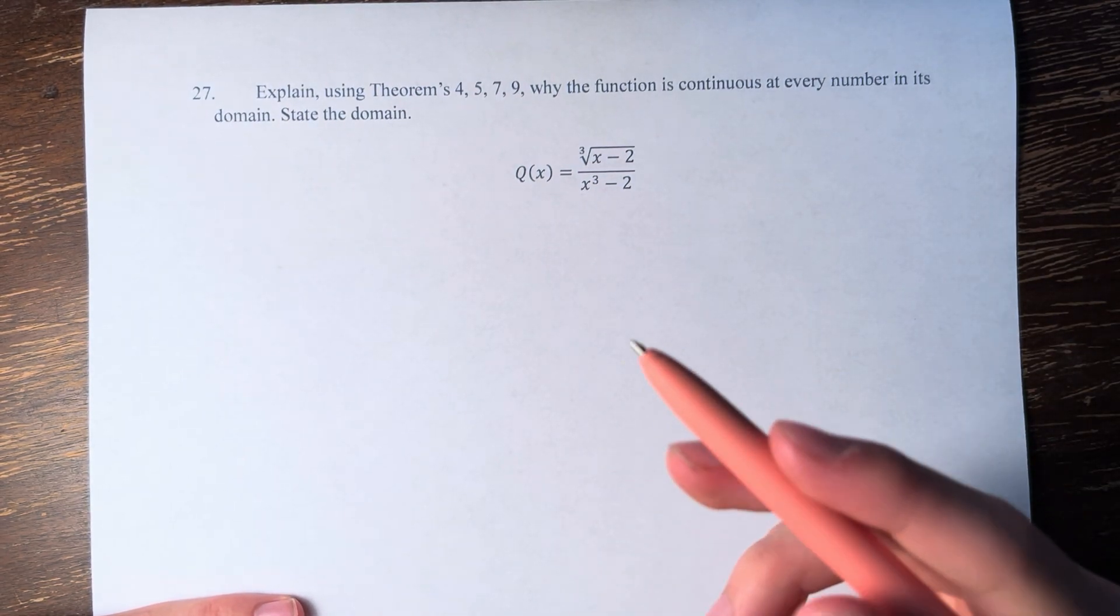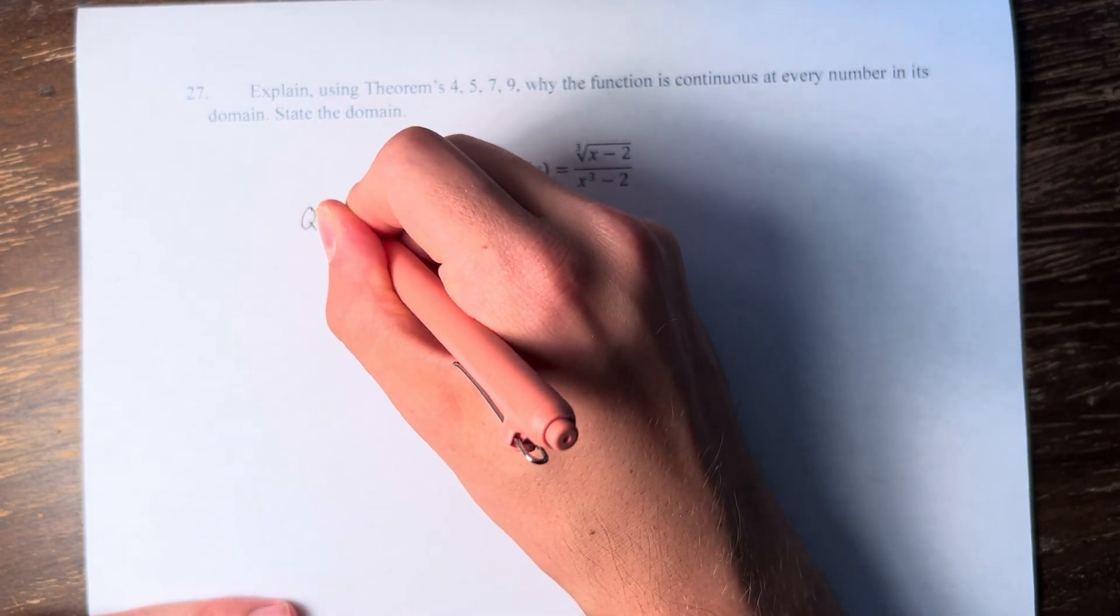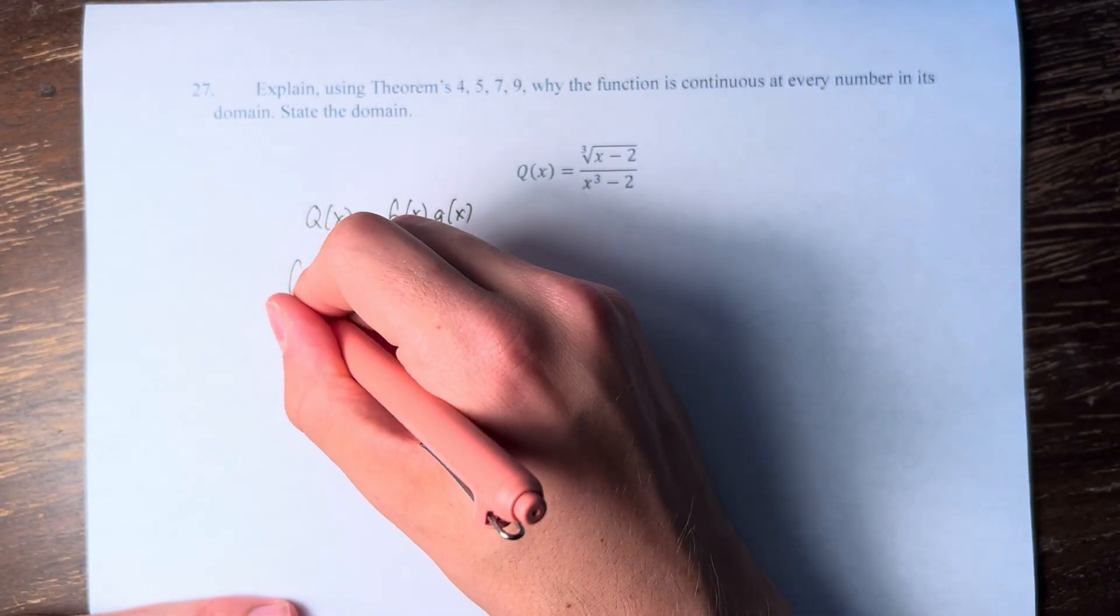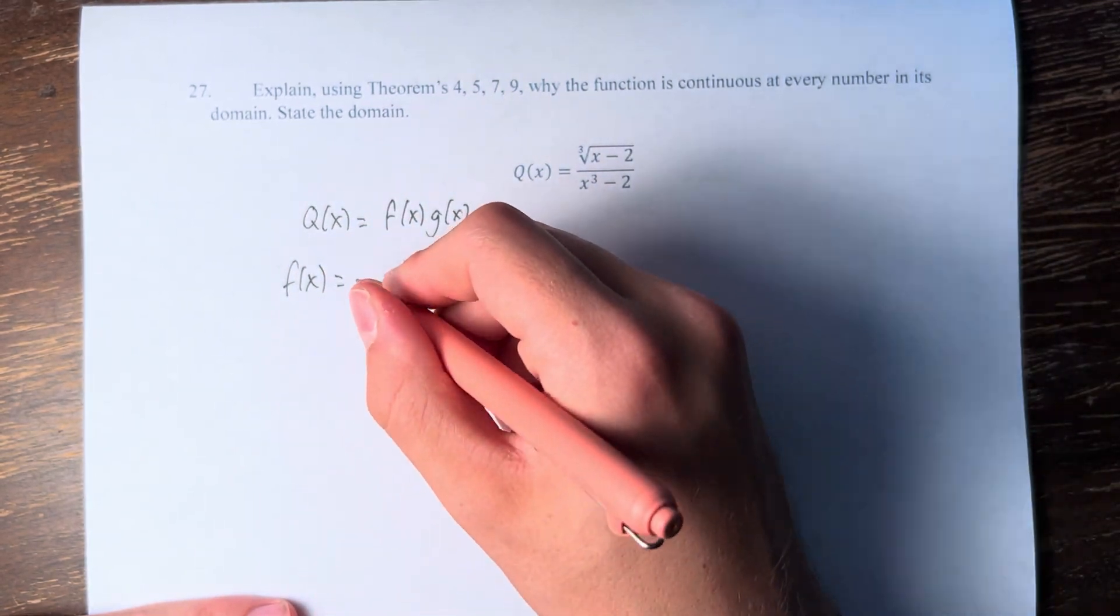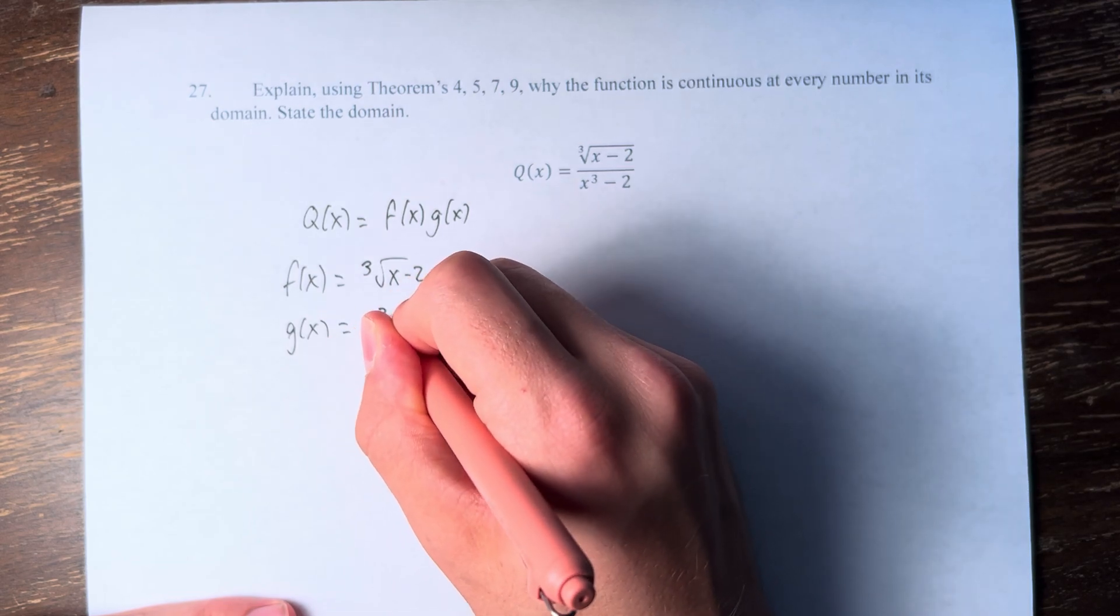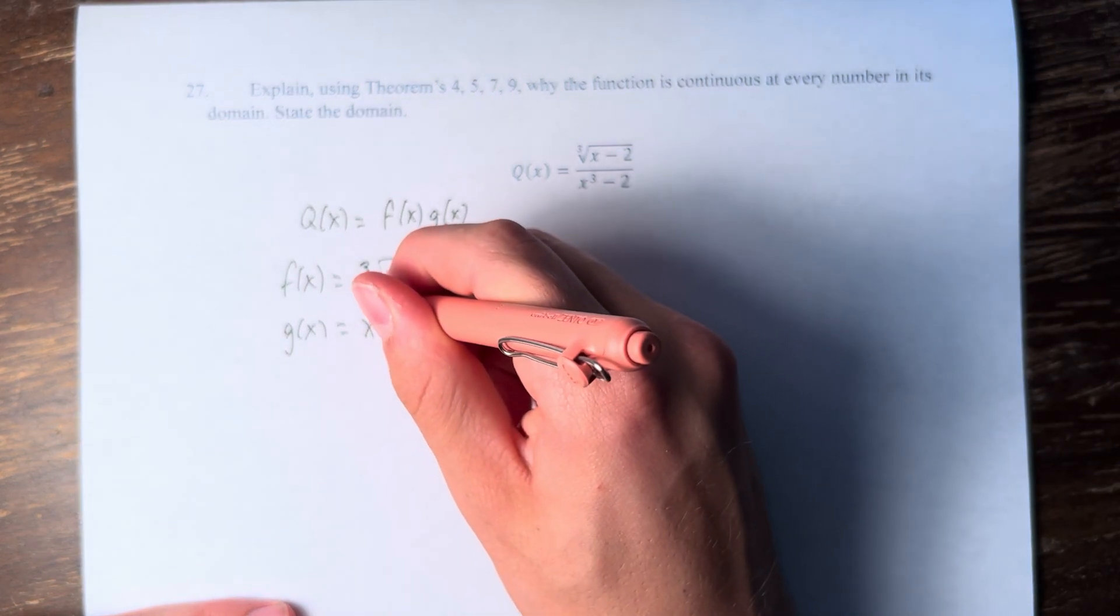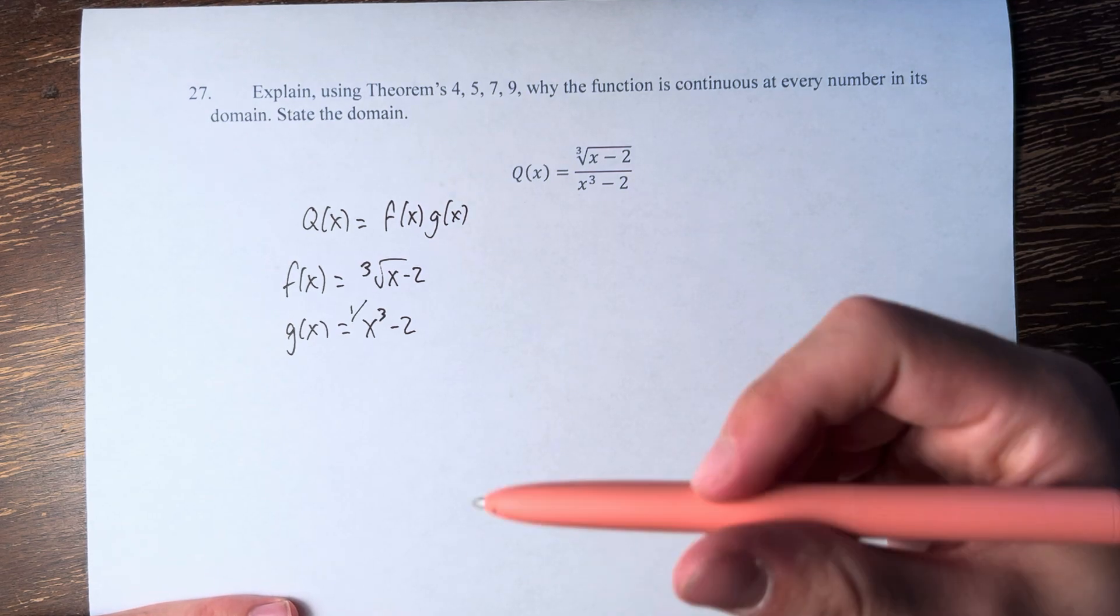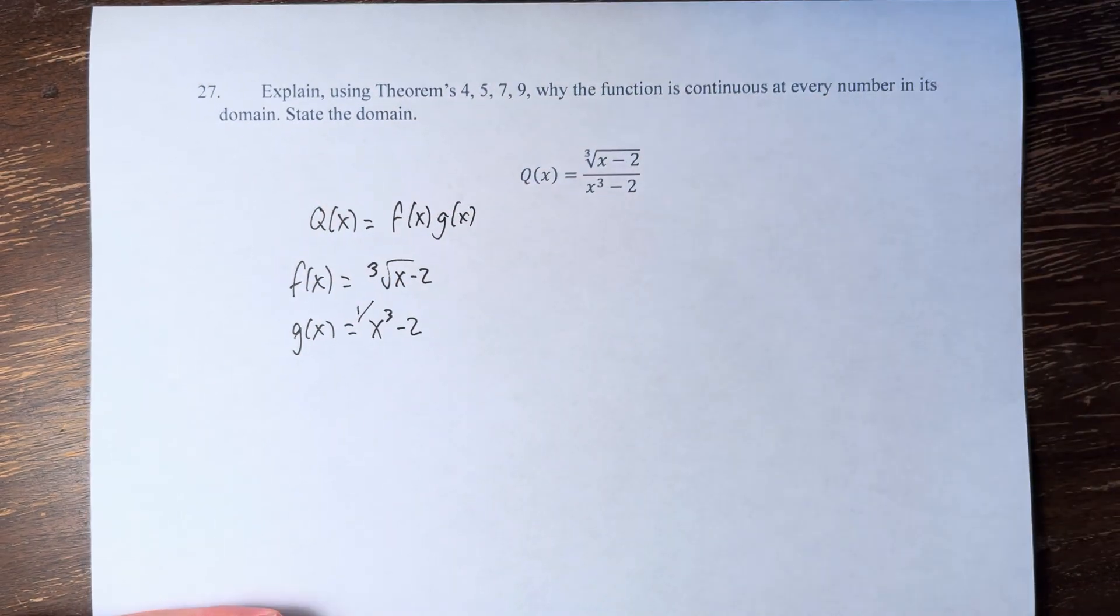So what we're going to do is write this as q of x equals f of x times g of x, where f of x equals the cube root of x minus 2, and g of x equals 1 over x cubed minus 2. And if you multiply f times g, you get q.